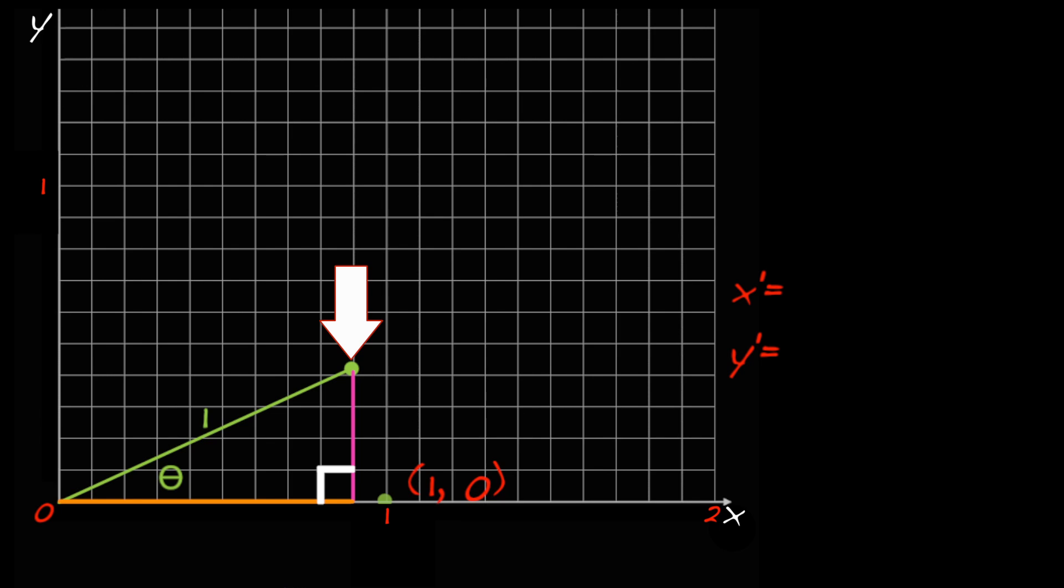Notice too that the magenta line is opposite theta and has length y', which we don't know just yet. The ratio of the opposite side over the hypotenuse is sine theta. That is, y'/1 equals sine theta, or in other words, y' equals sine theta.